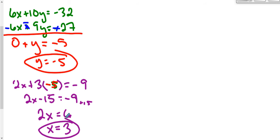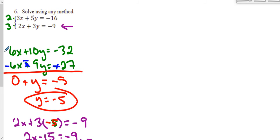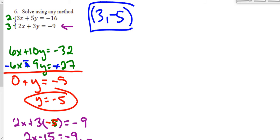So the solution to my system is going to be 3 for x and negative 5 for y — the point (3, negative 5). Now before I move on to the next question, I want to show you that I can get that same answer using substitution, even when there are fractions involved.